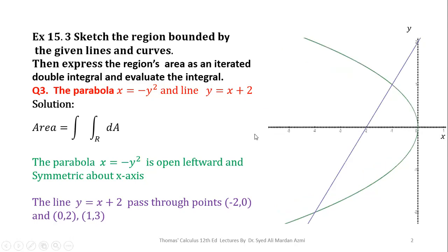Next we will plot the straight line y = x + 2. This straight line passes through the points (-2, 0) — when x = -2, y = 0 — and (0, 2) — when x = 0, y = 2. I have joined these two points and extended the line to obtain this region of integration.